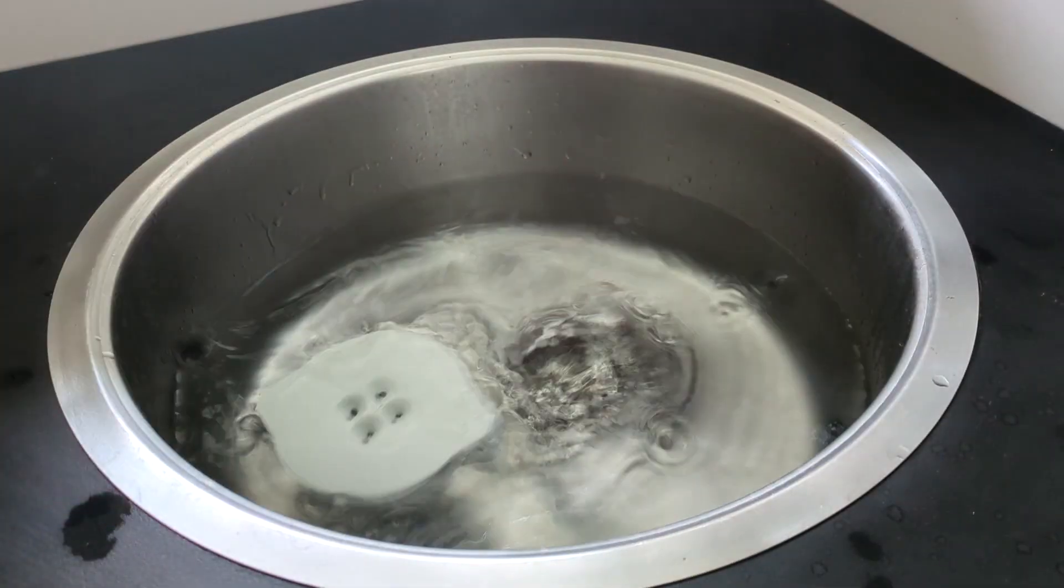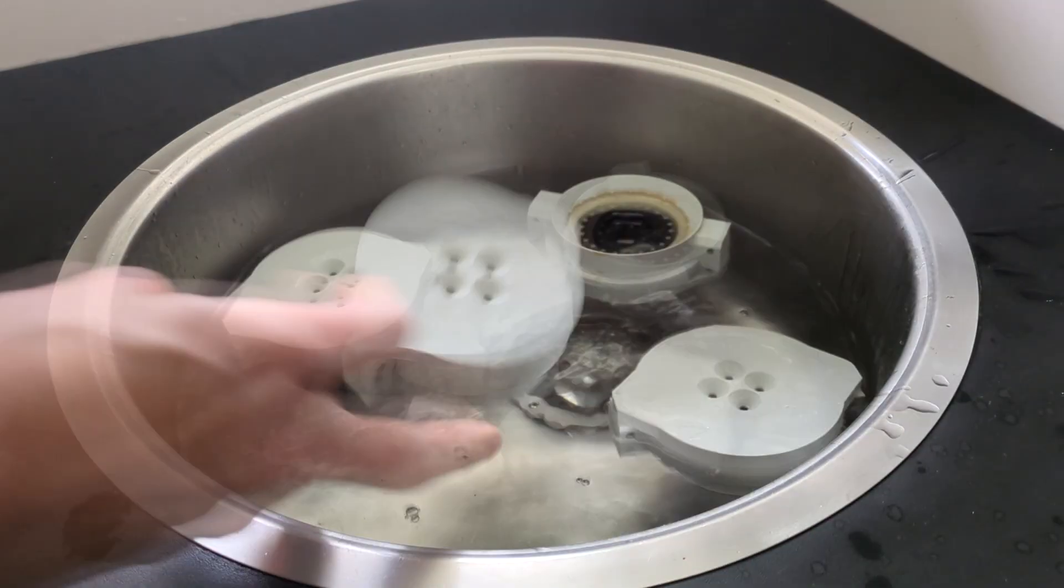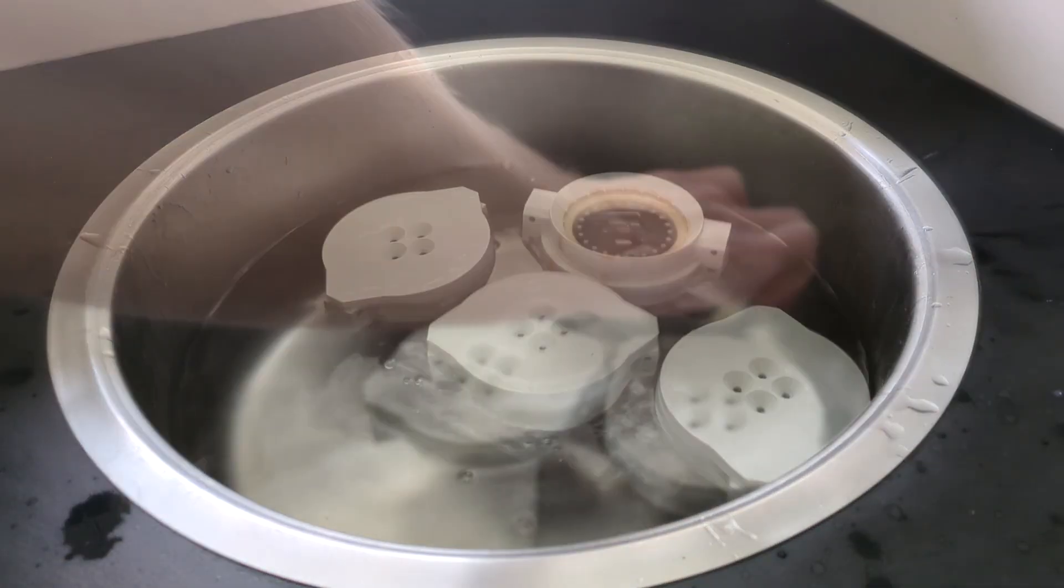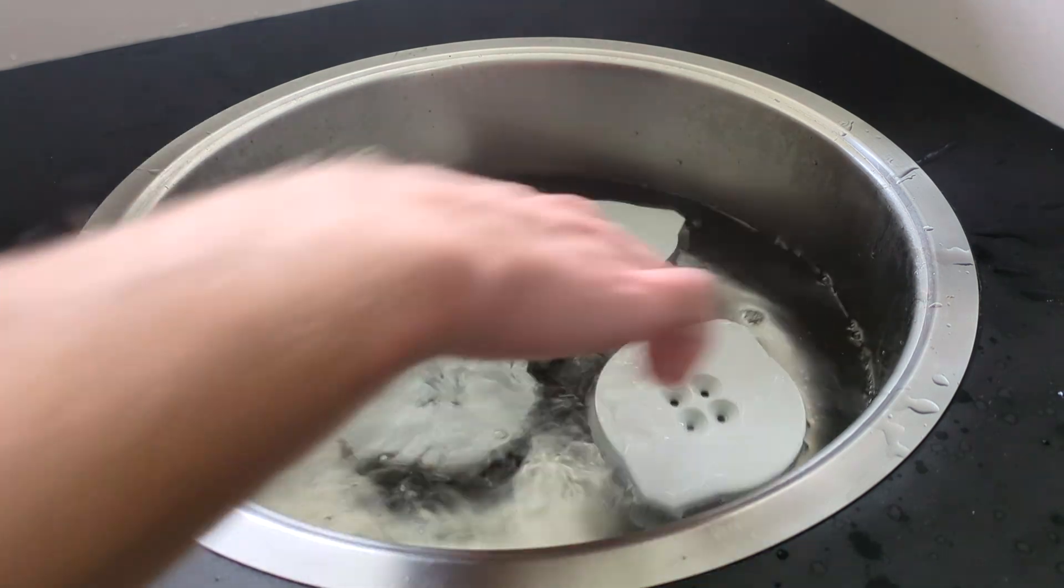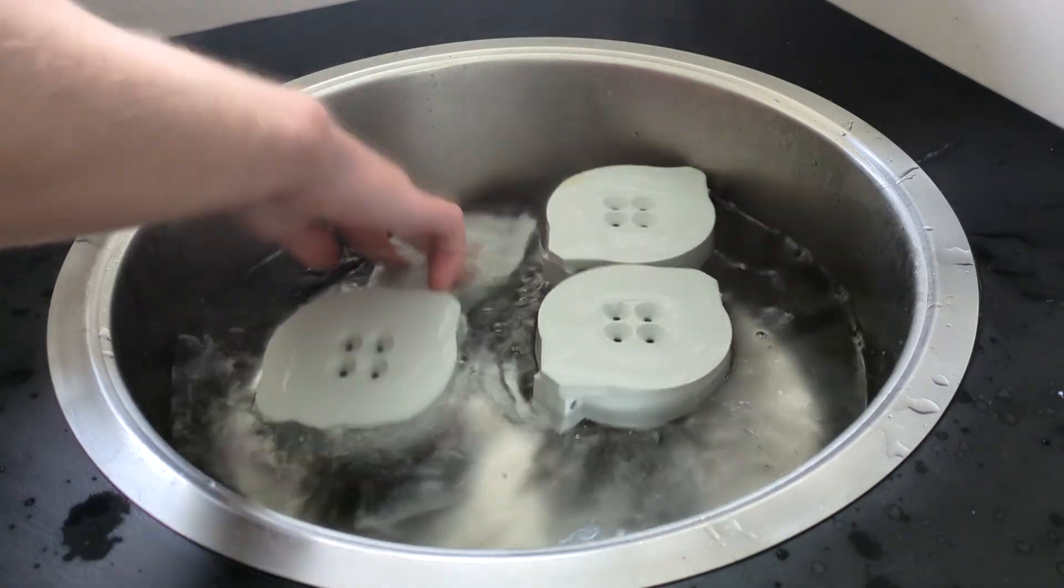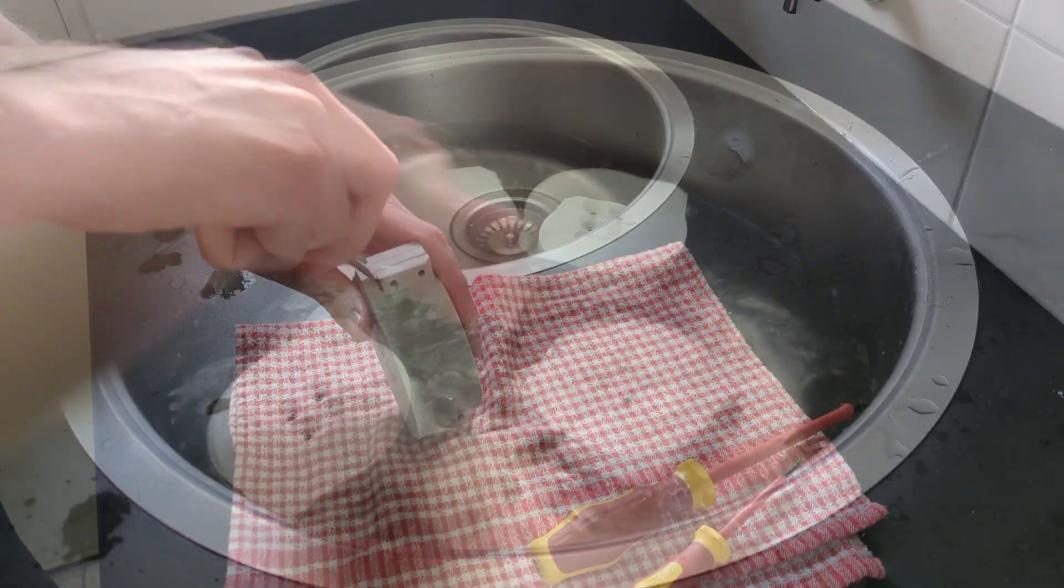A couple of days later it is time to release our polyurethane wheels from the molds and first they get a bath. This is to wash away the water soluble mold release that I use and they sit in there for up to an hour just to let the water dissolve as much mold release as possible.